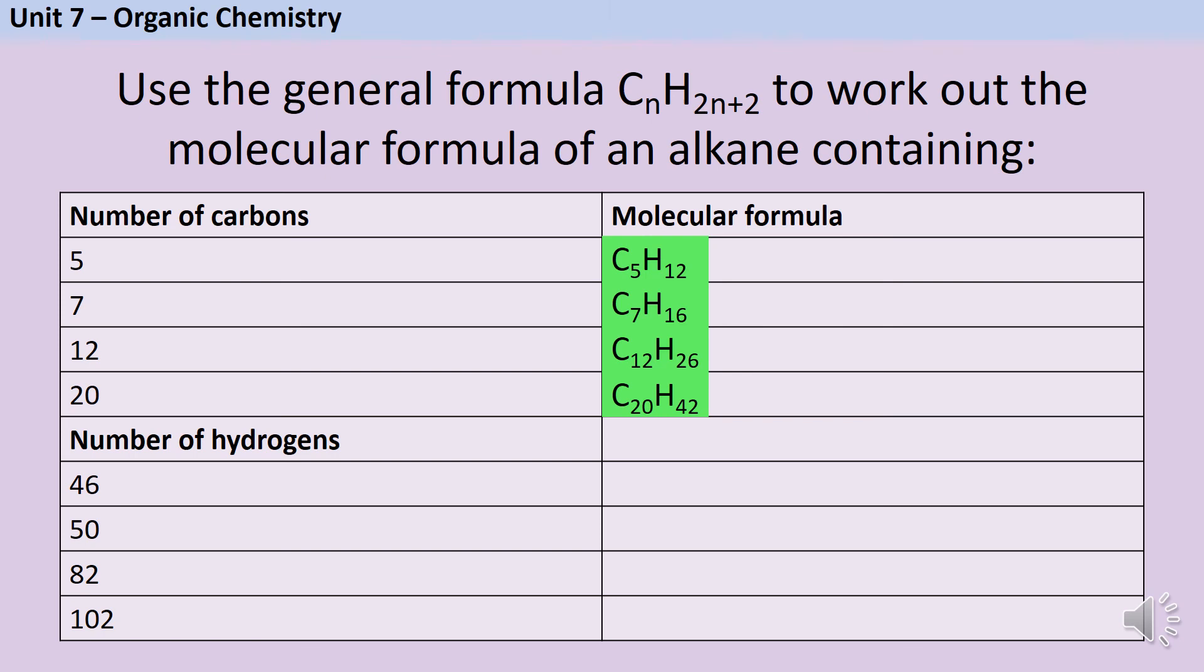Now the next bit is a little bit trickier but not too bad as long as you're happy with algebra. For these next four questions we want to work out what the molecular formula will be but we've been given the number of hydrogens rather than the number of carbons. So now we need to work backwards. If 46 is 2n+2 I can take away 2 from both sides to get 44 is 2n and then I can divide both sides by 2 to get 22 is n and therefore my molecular formula will be C22H46.